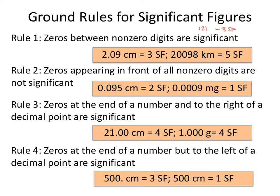Rule number two: zeros that appear in front of non-zero digits are not significant. Basically, anytime a number starts with zero, those zeros are not going to be significant digits. So in 0.095, neither of the leading zeros are significant — it's only the nine and five that are significant, so you have two sig figs. Same thing with 0.0009 — none of the leading zeros are significant, only that non-zero digit, so there's only one sig fig. Leading zeros are never significant.